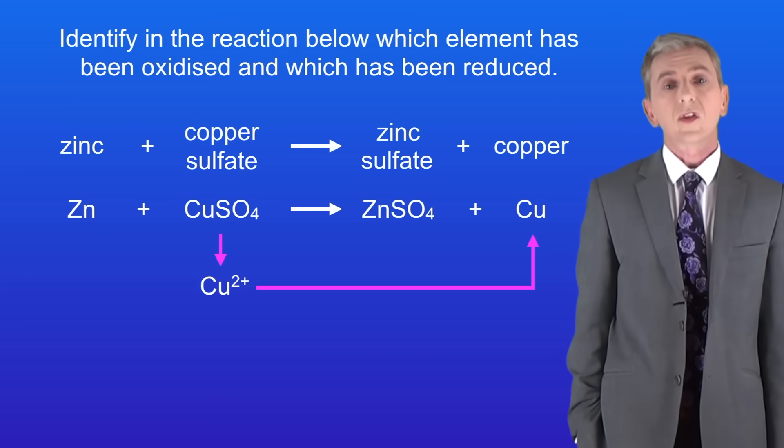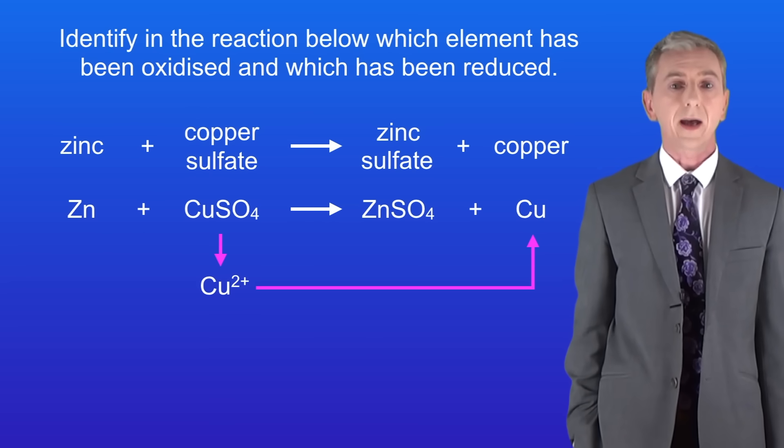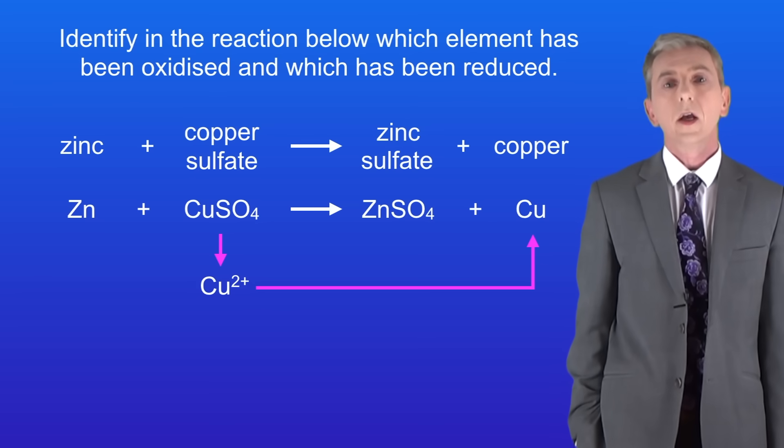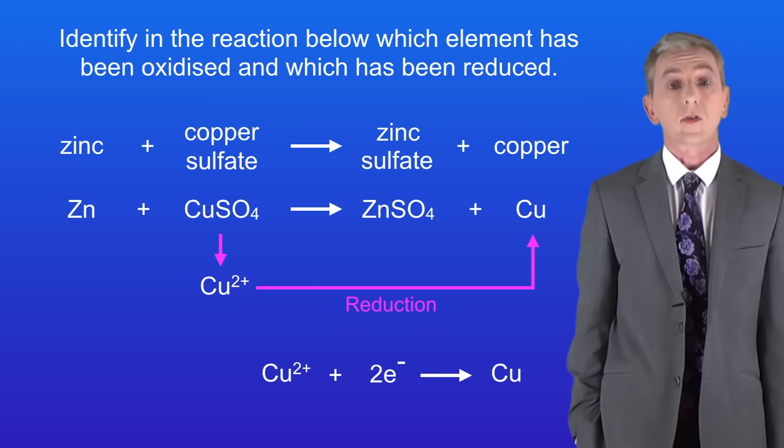Looking at the copper, we start with the copper ion Cu²⁺ and we make the copper atom Cu. For this to happen, the copper must have gained two electrons. In other words, it was reduced.